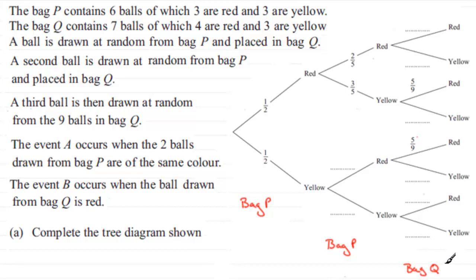Now, first of all then, we're told that the probability of drawing a red from bag P is a half. But really, we've got six balls in bag P, three of which are red. So the probability of drawing a red is just going to be three out of six balls, which clearly is a half. And similarly, the probability of drawing a yellow ball out of bag P is really three yellow balls out of six, three out of six, which is a half.